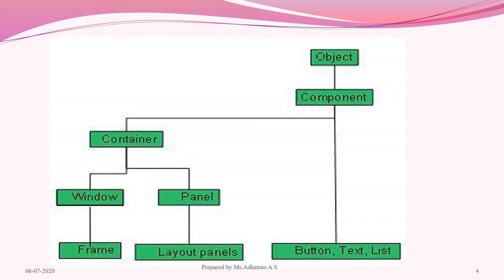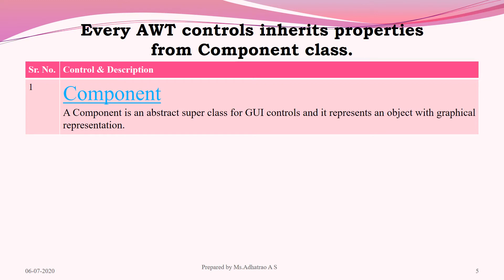This is the Hierarchy of AWT in short, just as a reminder. The first base class is Object, then Component which is the top level of the AWT hierarchy. The subclass Container has two subclasses: Window and Panel. Component also has the usual UI elements such as Button, Text, Labels, and so on. Every AWT control inherits properties from the Component class.